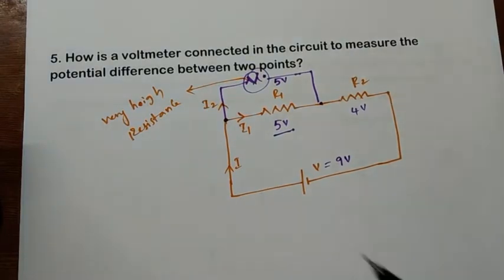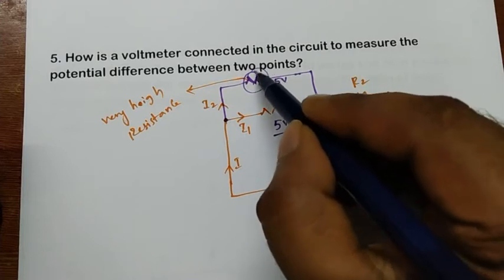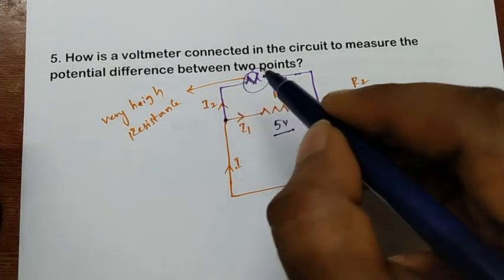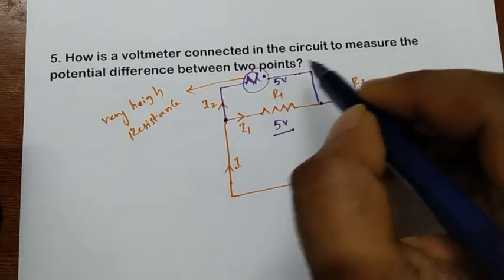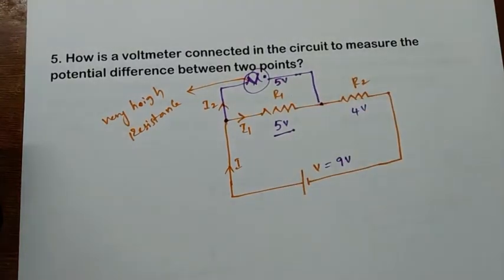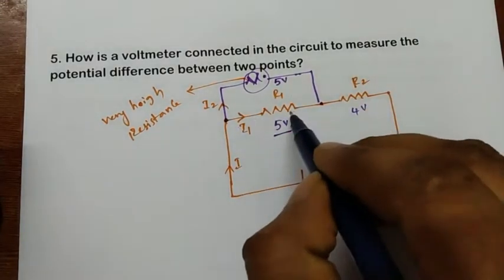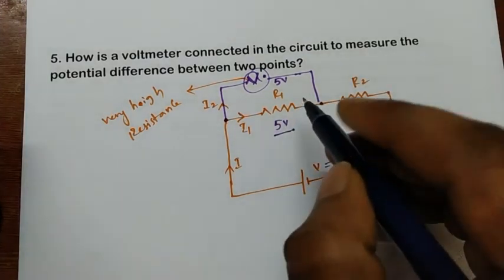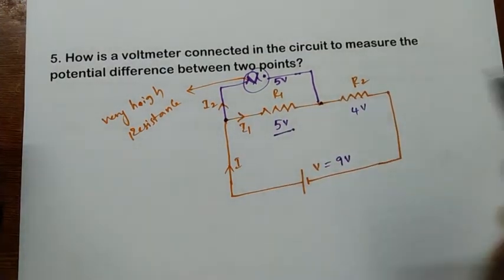Since the voltmeter has very high resistance, it will allow only a very small — a tiny — amount of current through it. The other branch will carry more current. These two currents then combine and continue through the circuit.